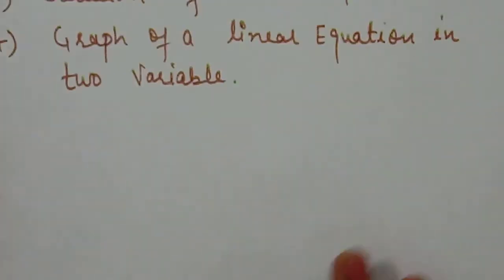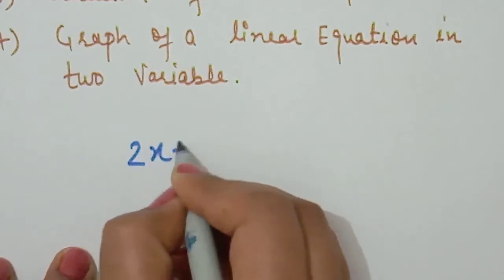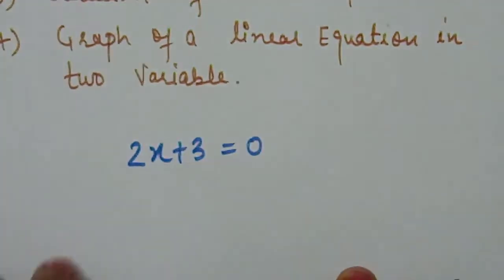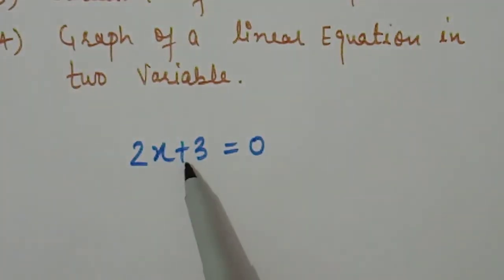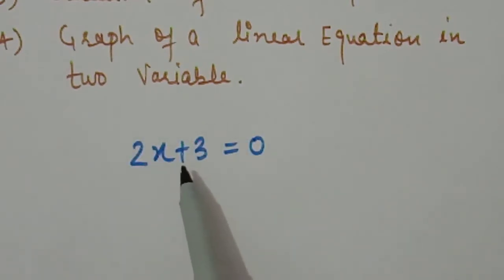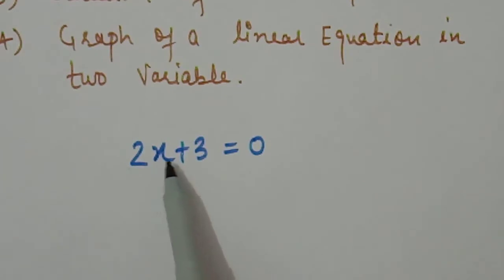Starting with the introduction: what is a linear equation? In earlier classes you studied linear equations in one variable. When we have an algebraic expression set equal to zero, it becomes an equation. It is a linear equation with one variable because the degree of the expression is one, and only one variable is present in it.